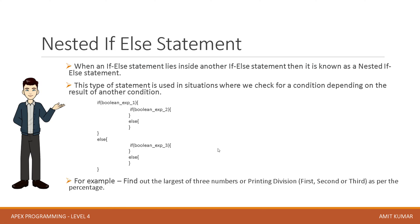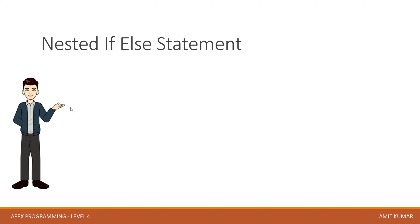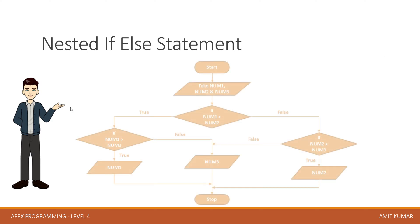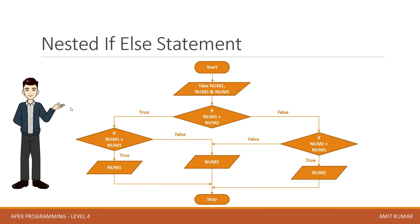And that's why boolean expression 3 will be evaluated only when boolean expression 1 is false. For example, finding out the largest of 3 numbers, or printing divisions like 1st, 2nd, or 3rd division as per the percentage obtained by a student. The same can be achieved with a nested ternary operator. We will see how we can achieve the same with a nested if-else statement and with a nested ternary operator, as discussed in Apix programming level 1 where we covered decision control structure.